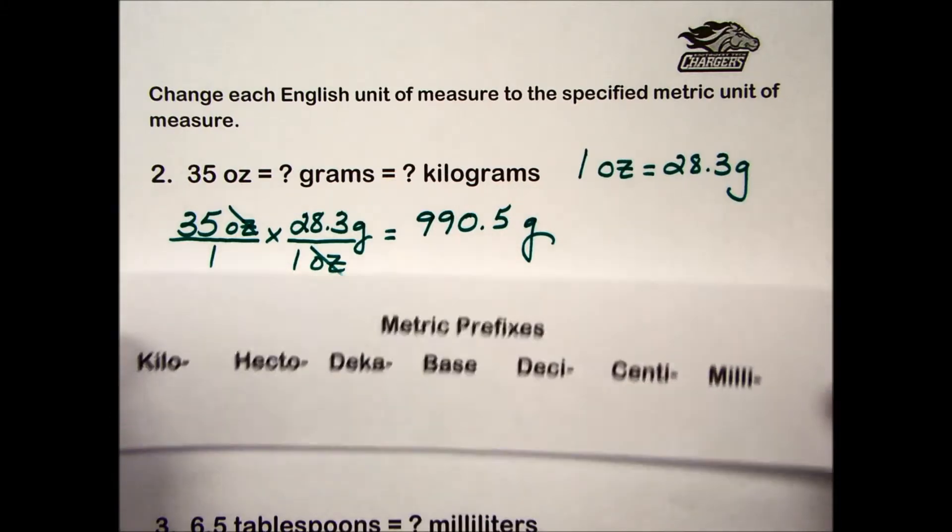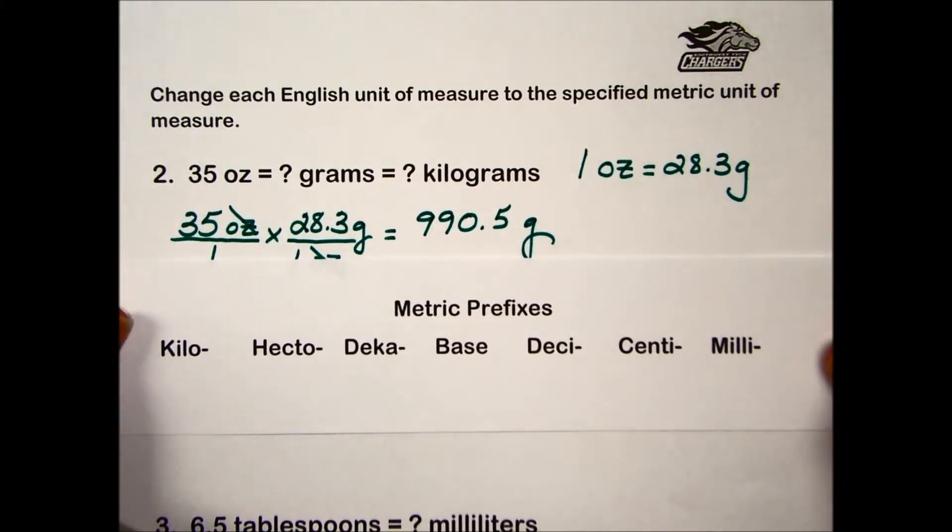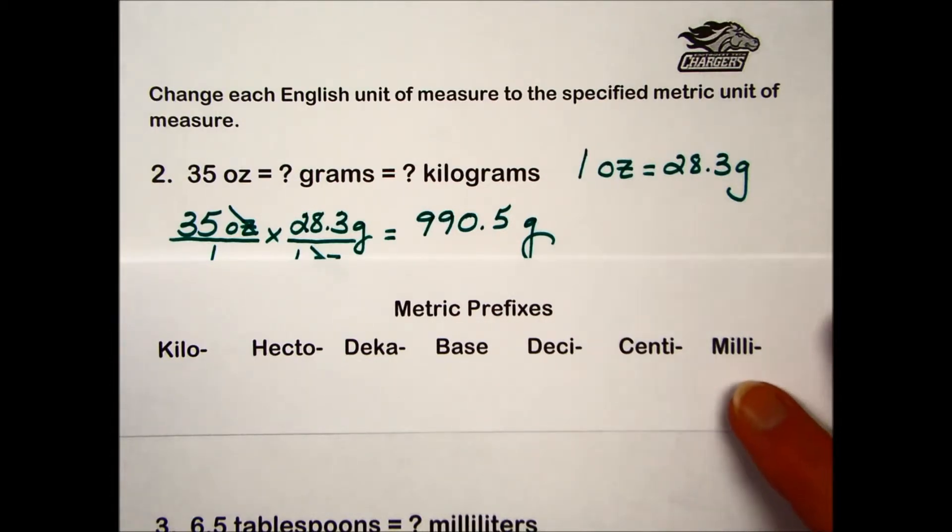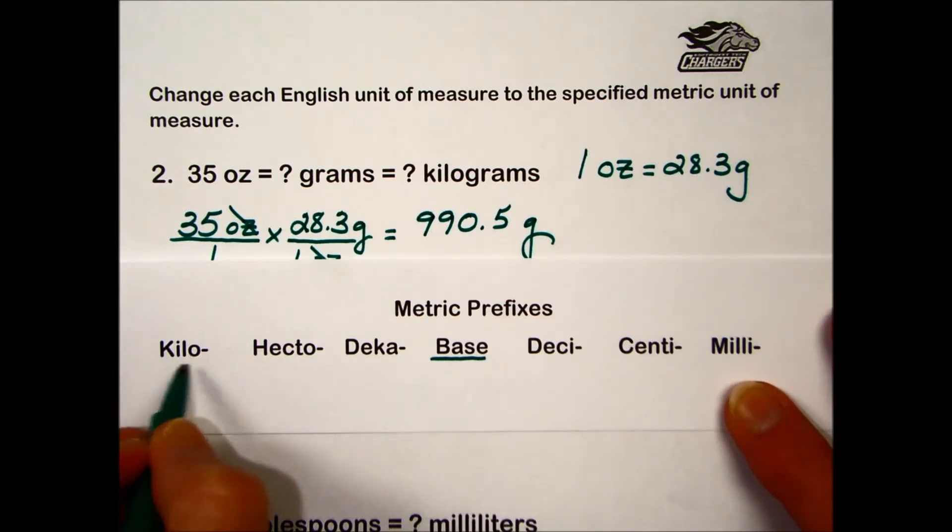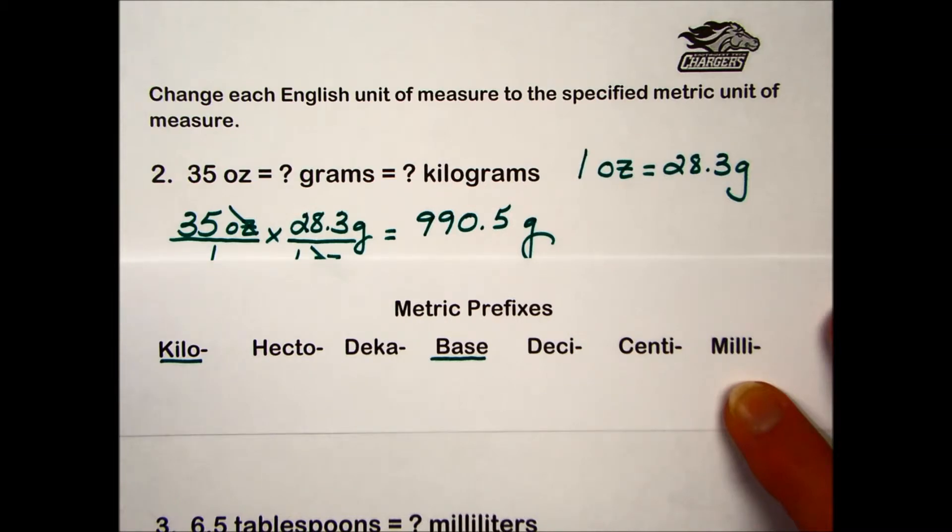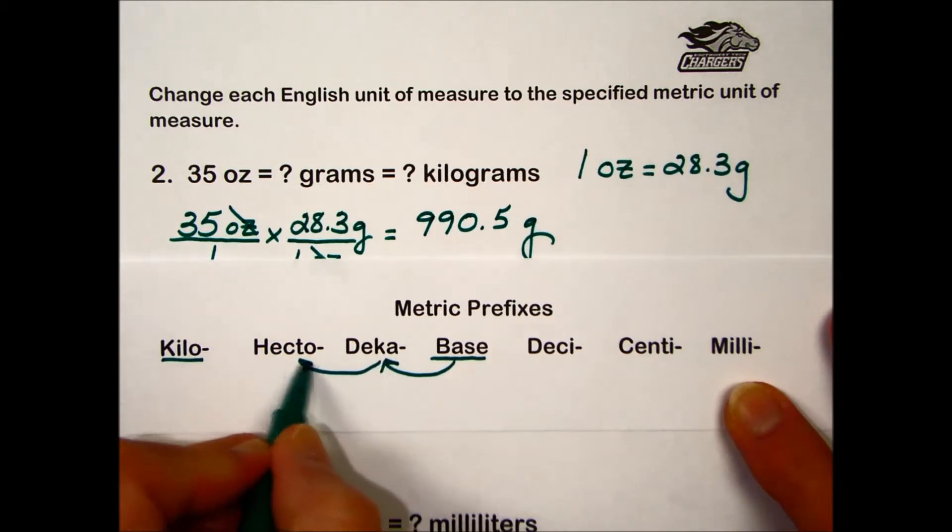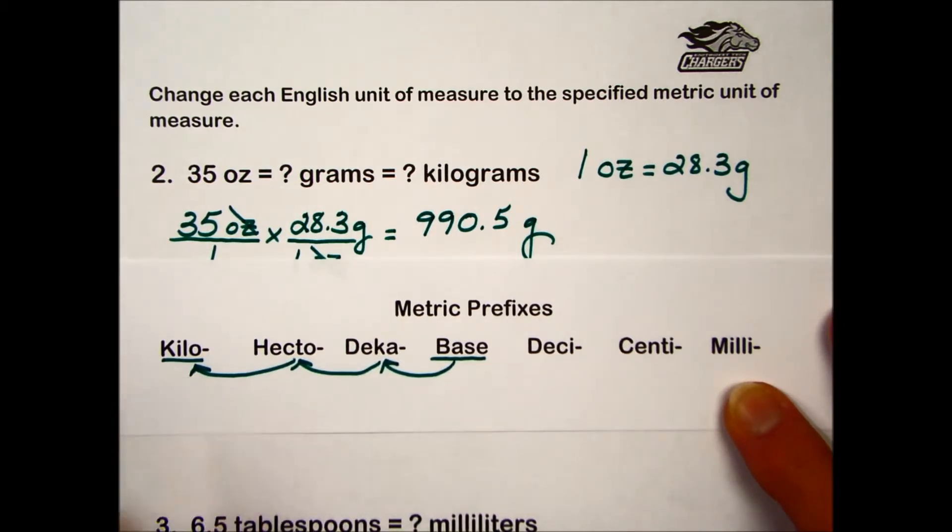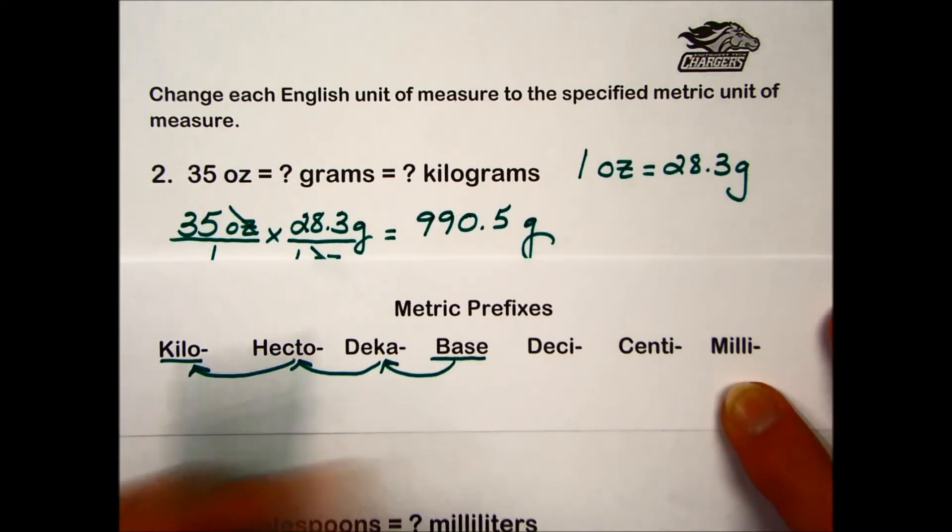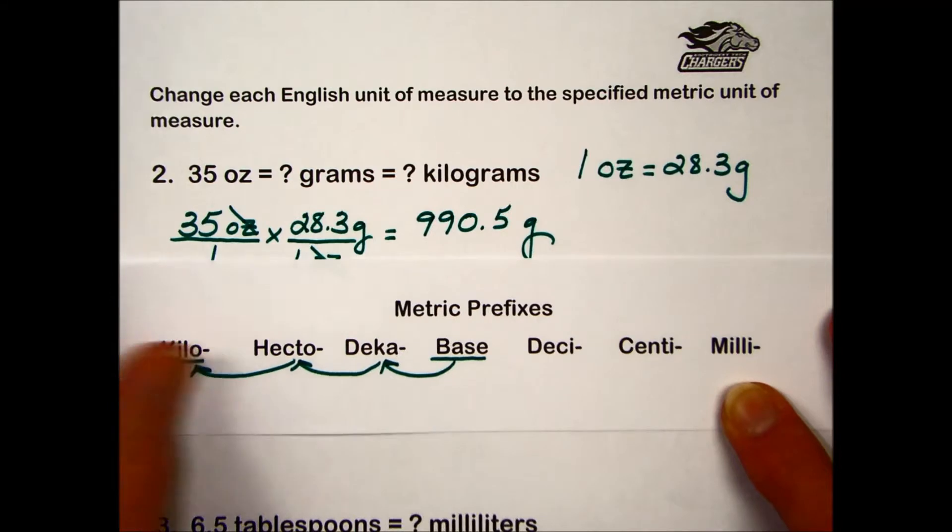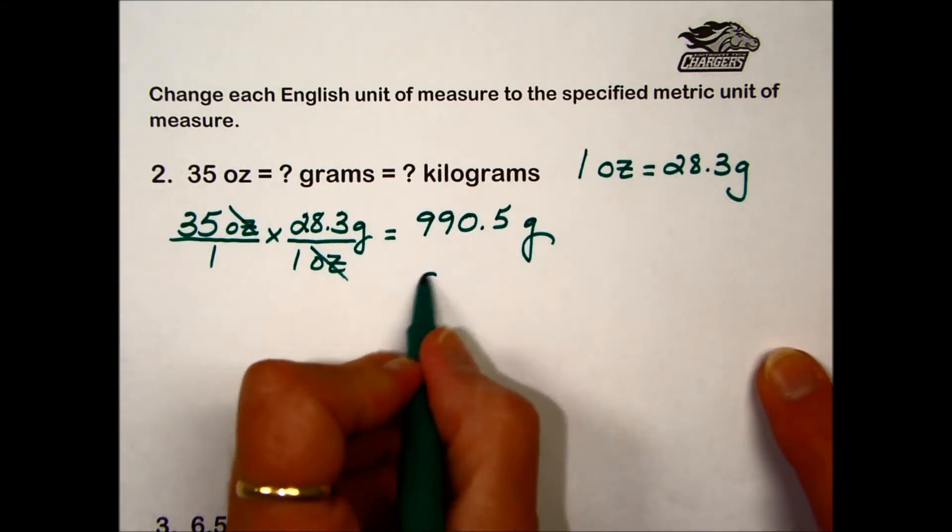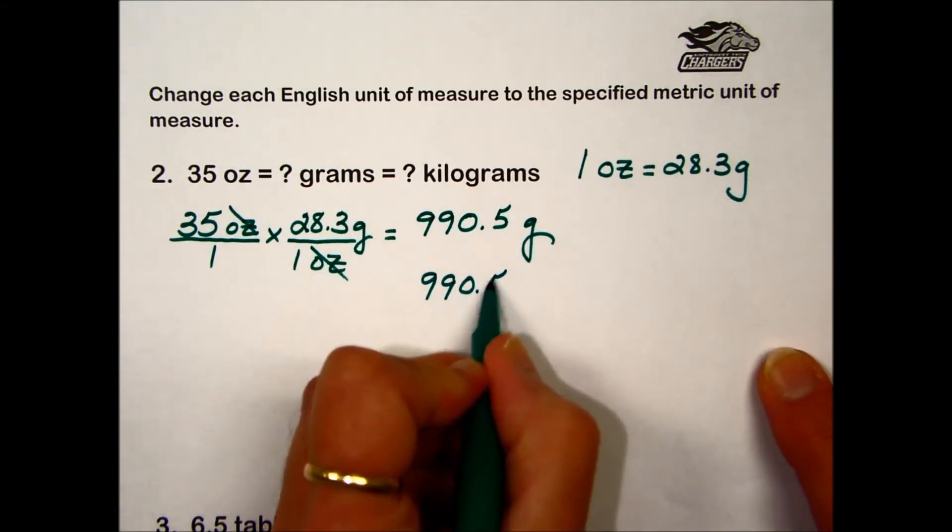So we have our first answer. The second part of two is asking us to convert our answer that's in grams into kilograms. To do that we'll look at our prefixes for the metrics. Grams is the base unit. So our value is here at the grams. We're headed to kilo prefix, which is 1 power of 10, 2 powers of 10, 3 powers of 10.